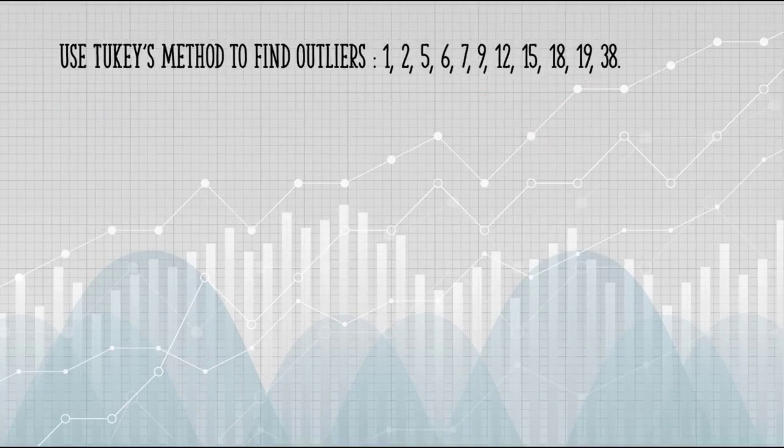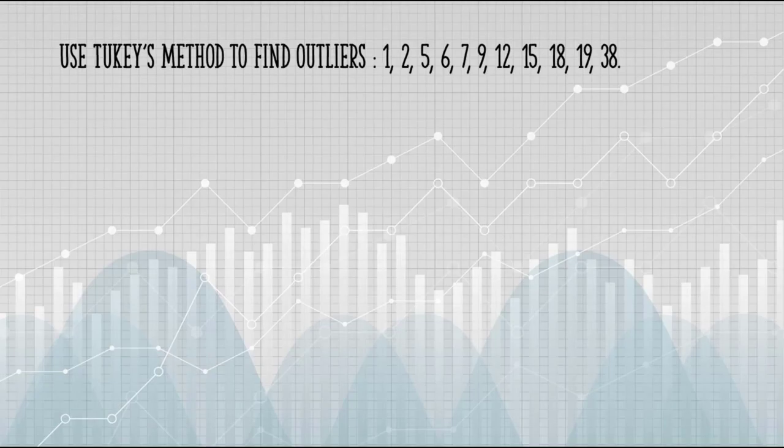The Tukey method also uses the interquartile range. It's the same procedure, but the terminology is a little different. For example, the Tukey method uses the concept of fences. We have two formulas, one for the lower fence, and one for the higher fence.